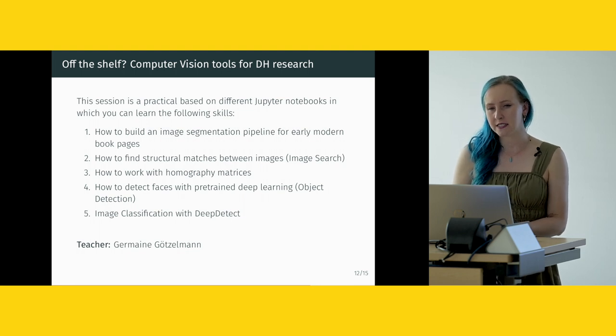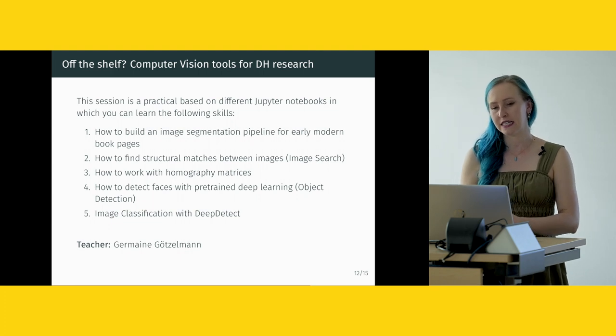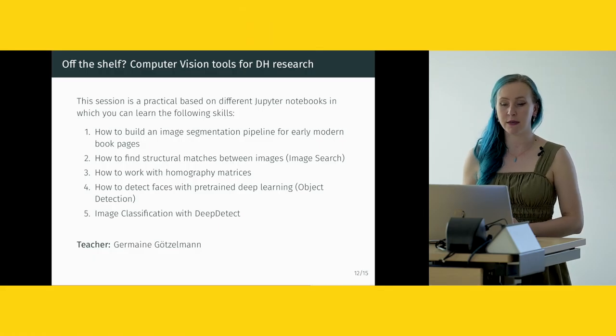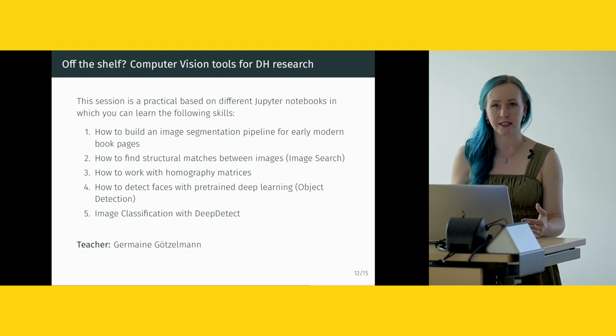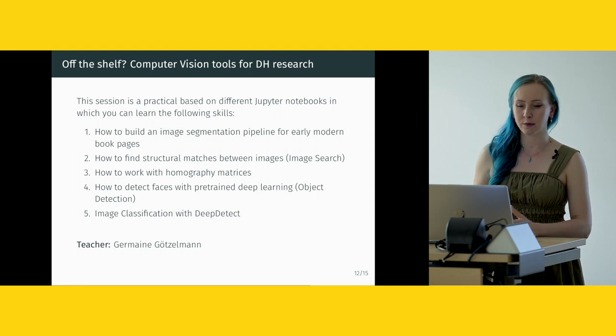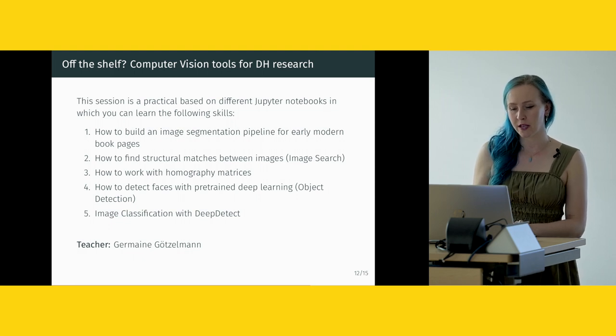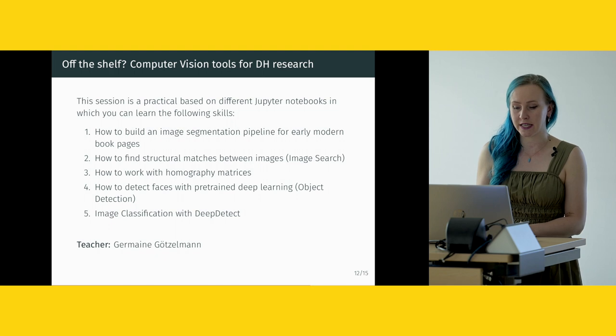The next session is called Off-the-Shelf Computer Vision Tools for Digital Humanities Research — somewhere between a practical and a theory lesson, based on different Jupyter notebooks offered as a buffet where you can pick what interests you. Skills include how to build an image segmentation pipeline for early modern book pages, find structural matches between images for image search, work with homography matrices, detect faces with pre-trained deep learning as a case of object detection, and image classification with DeepDetect.